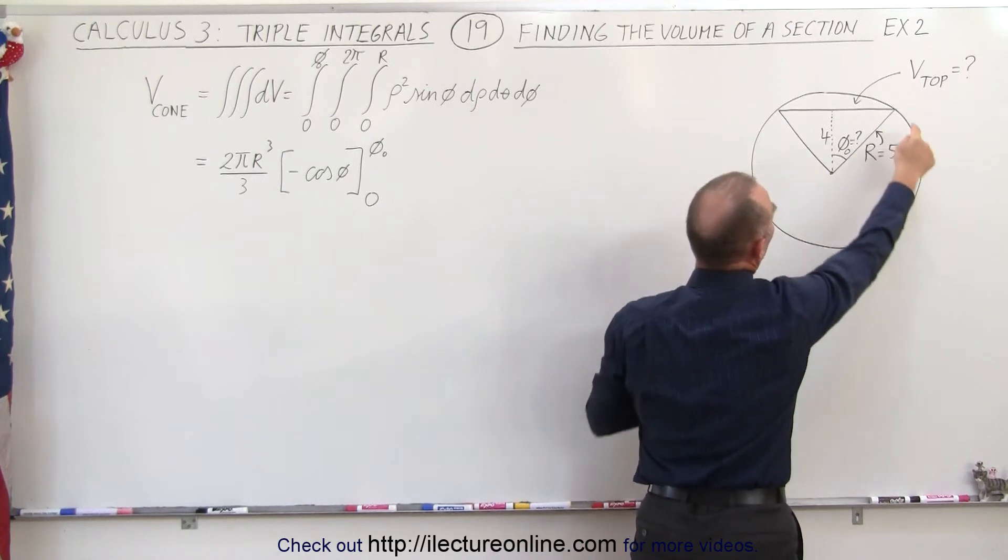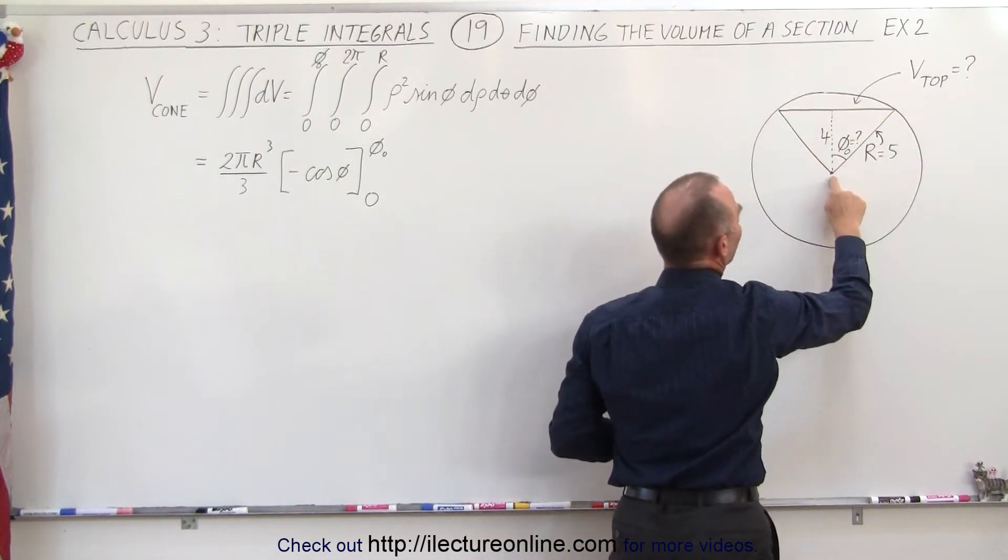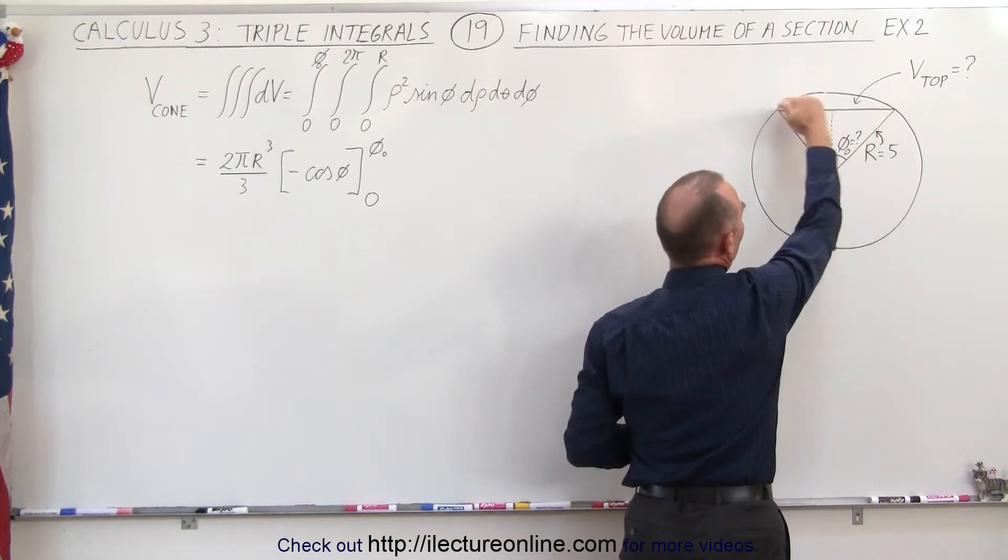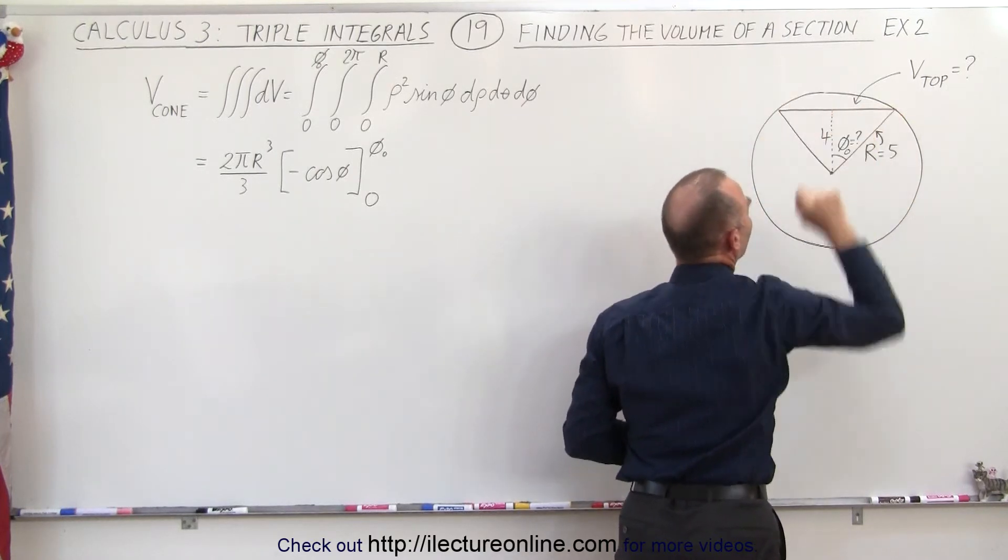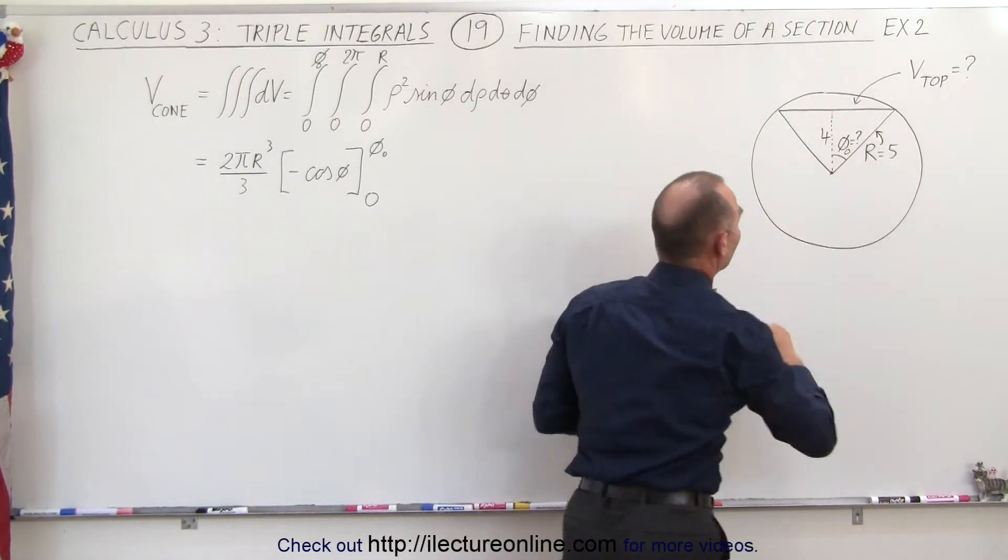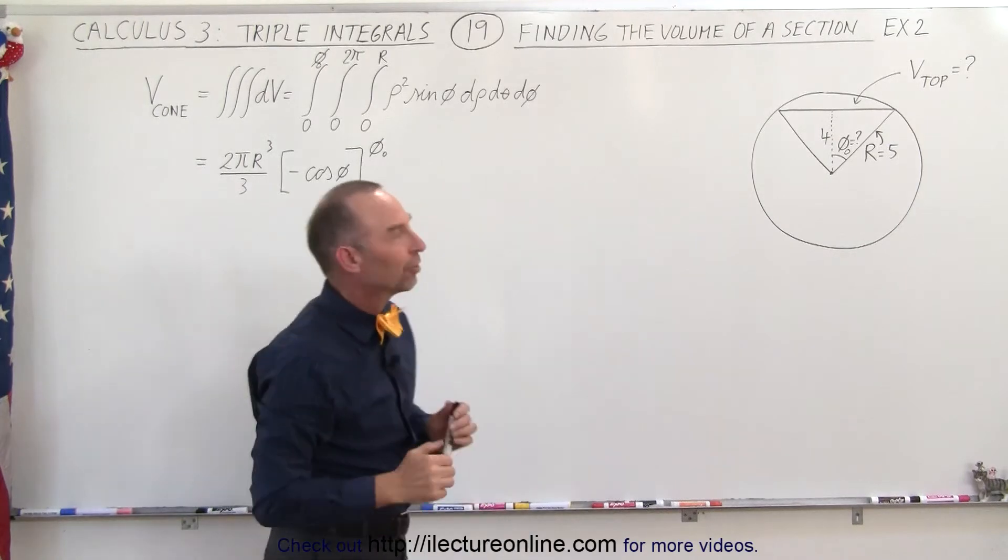So here we have a sphere, we're trying to find the volume of that top portion. If the radius of the sphere is 5, the distance of the line that cuts off that top portion of the sphere is equal to 4, and so we don't know the angle, and we're trying to find the volume of that small little slice off the top of the sphere.